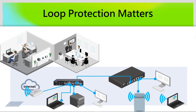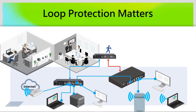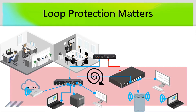Why does loop protection matter? In an operational environment, a loop may happen more easily than you think. For example, when the existing network is not enough for new devices because the business grows, you may ask someone to set up a new switch and change the network configuration. However, someone else who doesn't really know the new network topology might connect the switch to another one, which leads to a loop and can crash the whole network.